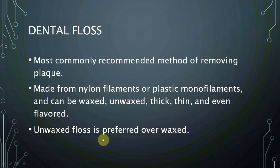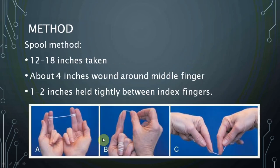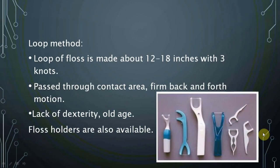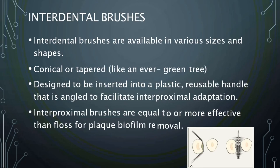Dental floss is a nylon filament that may be waxed or unwaxed; unwaxed is preferred. It can be applied by the spool method or the loop method. In the spool method, 12 to 18 inches of floss is taken, with about 4 inches wound around the middle finger and 1 to 2 inches held tightly between the index fingers. In the loop method, a loop of 12 to 18 inches is made with three knots and passed between the contact area.